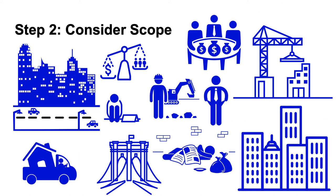Step 2: Consider scope. Think about how long your paper is and what you can reasonably address. If you're writing a seven-page paper, you can't tackle a huge issue like gentrification or climate change — it's just too big.